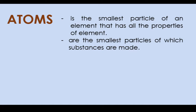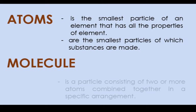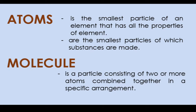These are the smallest particles of which substances are made. And in grade 7, you learned about elements and that atoms of most elements have the ability combined with other atoms forming molecules. Molecules is a particle consisting of two or more atoms combined together in a specific arrangement. It is an electrically neutral particle.